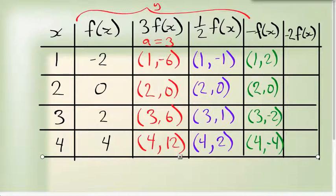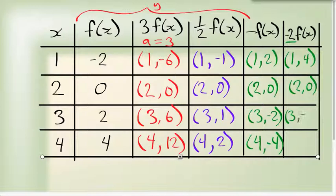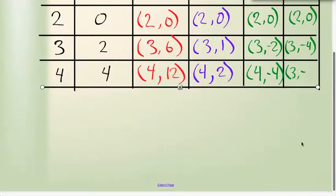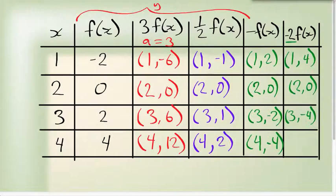If I combine a stretch and a reflection, I end up taking that y value. It had been (1,-2), multiply by negative 2. Minus 2 times minus 2 gives me positive 4. (2,0), well, 0 times minus 2 still gives me 0. 2 times minus 2 gives me minus 4. And 4 times minus 2, this should be (4,-8).